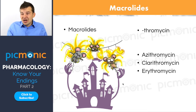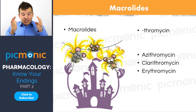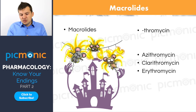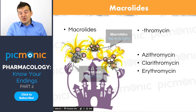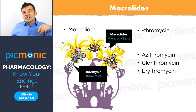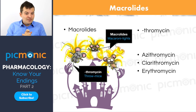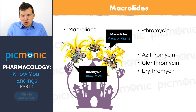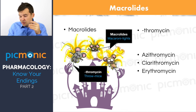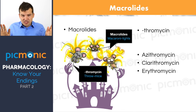The next class is macrolides. Many students mix up aminoglycosides and macrolides, so it's important to know the difference. You can remember macrolides by the 'macaroni lights' image and the throwing mice — 'throw-my-cin' — for the '-thromycin' ending. There's no 'o' at the end: it's azithromycin, not 'azithromyosin.'